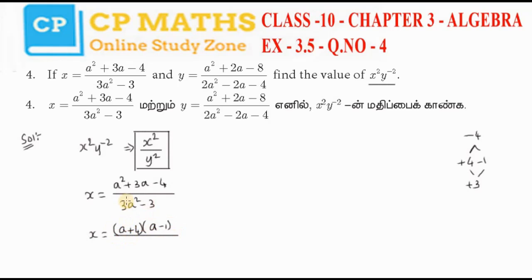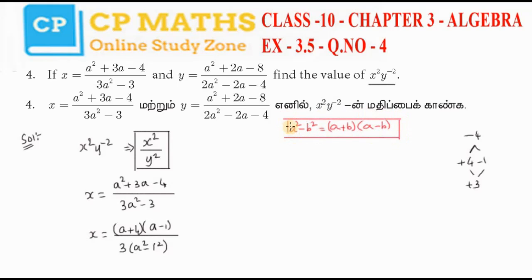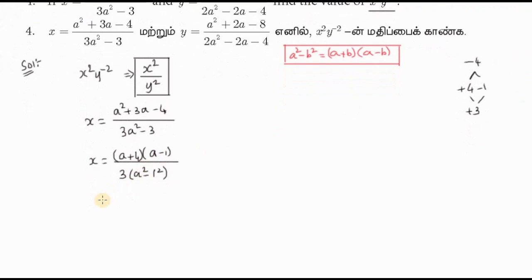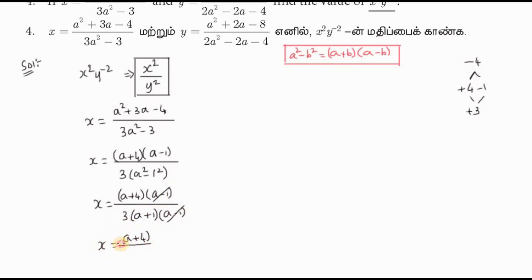Let's divide by 2. We replace the formula: a squared minus b squared equals a plus b into a minus b. We substitute in the direct form: x equals a plus 4 into a minus 1, divided by 3 into a plus 1 into a minus 1. The a minus 1 terms cancel. Final answer: x equals a plus 4 divided by 3 into a plus 1.